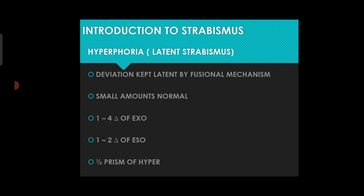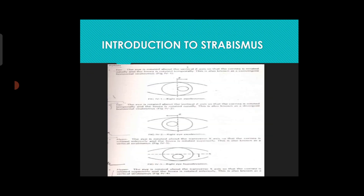Small amounts of hyperphoria are normal. Heterophoria within normal limits is: one to four prism diopters of exophoria, one to two prism diopters of esophoria, and half a prism diopter of hyperphoria. Exo means when the eye goes outward.